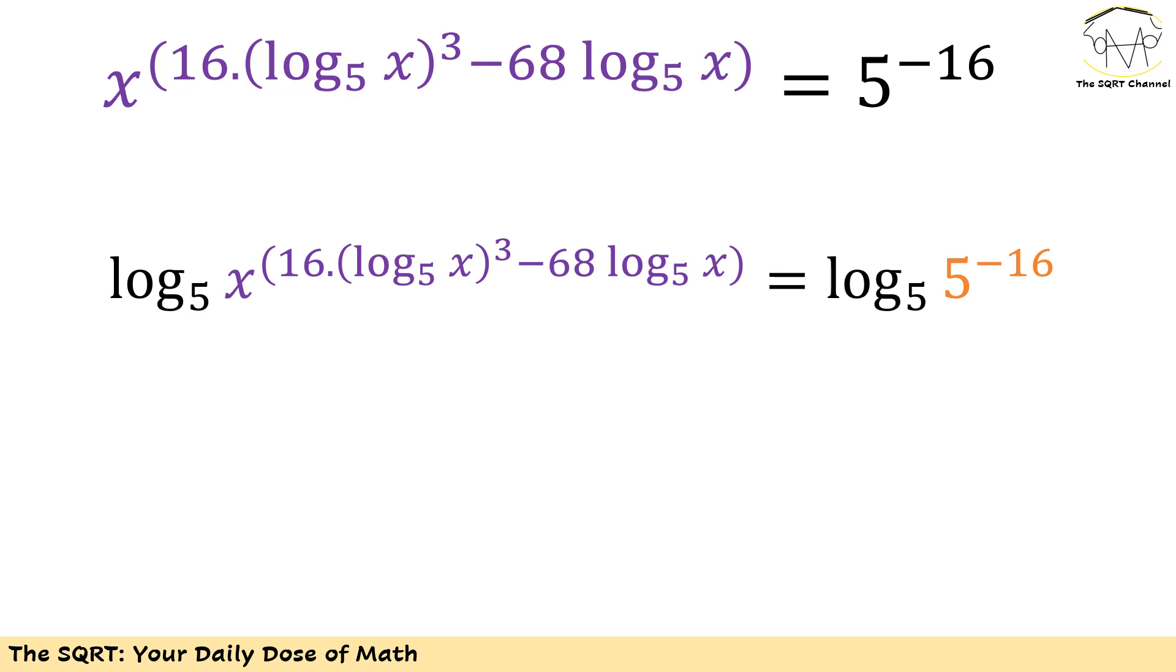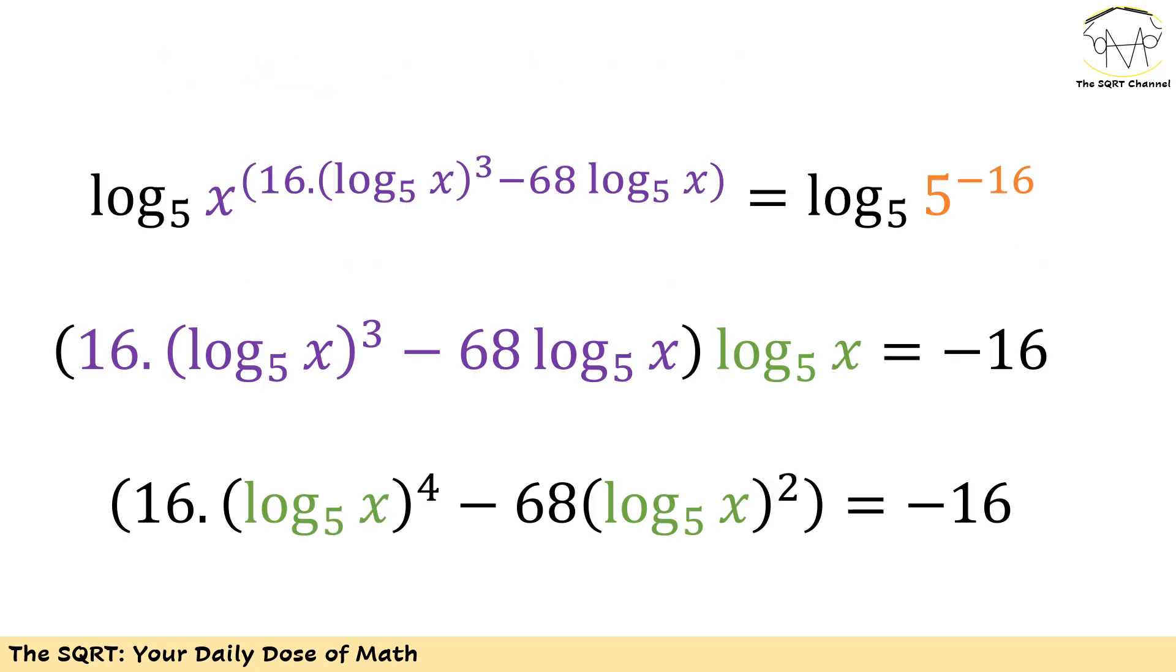On the right hand side it's going to be easy. We are going to have log of 5^(-16) in base 5. For the left hand side, let's use whatever I have and rewrite it as log of that value in base 5. Now let's see what I have. Let's focus on the right hand side which is easier for now. Log of 5^(-16) in base 5 is going to be -16 times log of 5 in base 5, which is simply -16. That's easy.